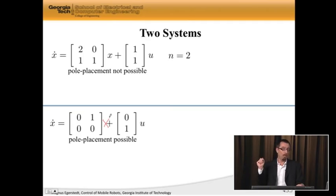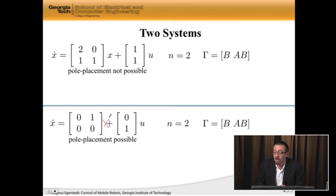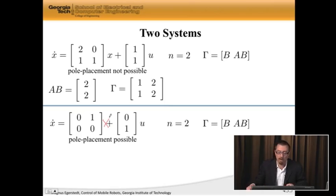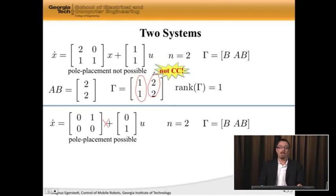First of all, this top system is a two dimensional system. n is equal to 2. And gamma, in this case, is b, a, b, all the way to a n minus 1, b. But n minus 1 is equal to 1. So gamma is simply b times a, b. Well, the lower system also is two dimensional. Gamma is equal to b times a, b. Well, let's compute a, b then. It turns out to be equal to 2, 2 for the upper system. And if I plug this into gamma, I get b here and a, b here. So this is 1, 1, the first column, and 2, 2, the second column. And if I multiply the first column by 2, I get the second column. So this thing does not have two linearly independent columns. In fact, it has one linearly independent column. So the rank of gamma is equal to 1, which means it's not completely controllable.